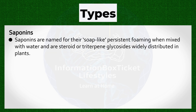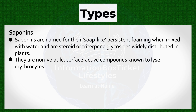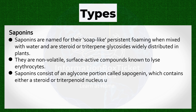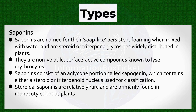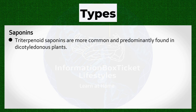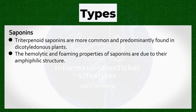Saponins are named for their soap-like, persistent foaming when mixed with water, and are steroid or triterpene glycosides widely distributed in plants. They are non-volatile, surface-active compounds known to lyse erythrocytes. Saponins consist of an aglycone portion called sapogenin, which contains either a steroid or triterpenoid nucleus used for classification. Steroidal saponins are relatively rare and are primarily found in monocotyledonous plants, while triterpenoid saponins are more common and predominantly found in dicotyledonous plants.